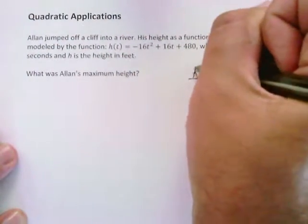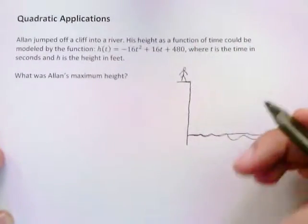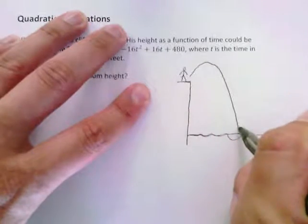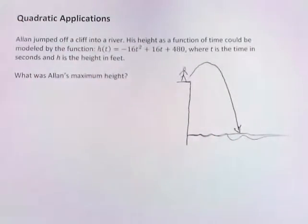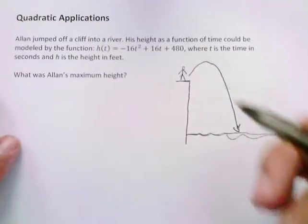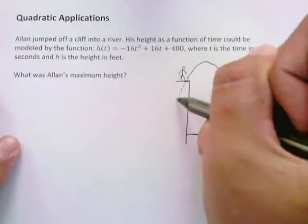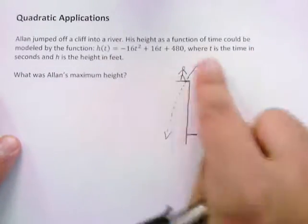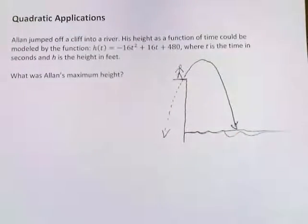So let's say that is a cliff and down here is our river. Allan was on the top of this cliff and, just like anyone else, when you jump, you're going to go up and then you're going to come down and fall into the river. So that's kind of the path that Allan is traveling. And if you look at it, even though this is a picture, if I kind of get the symmetry here, you're going to see that there is a quadratic here.